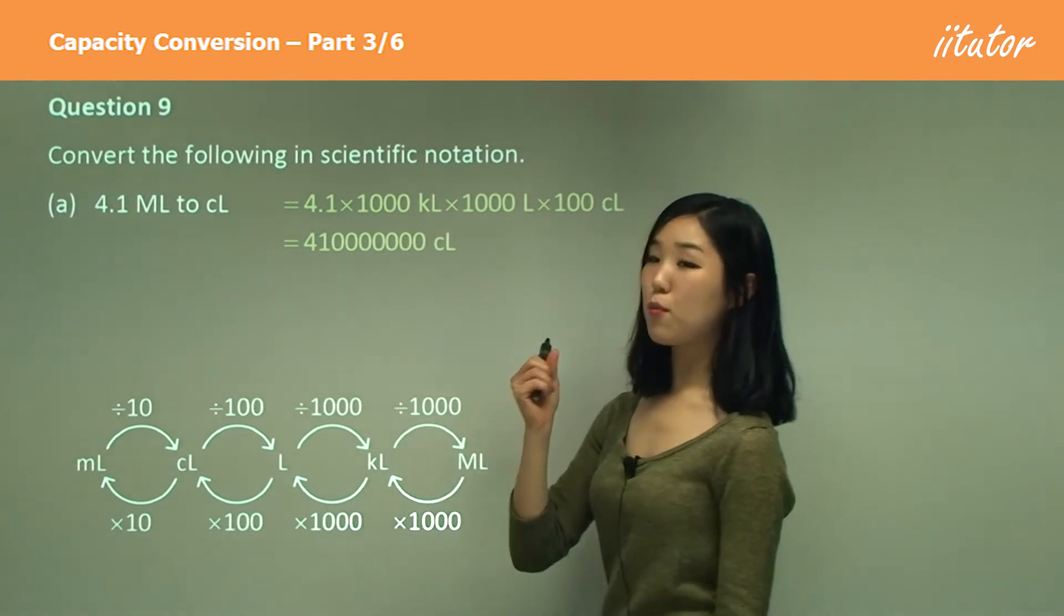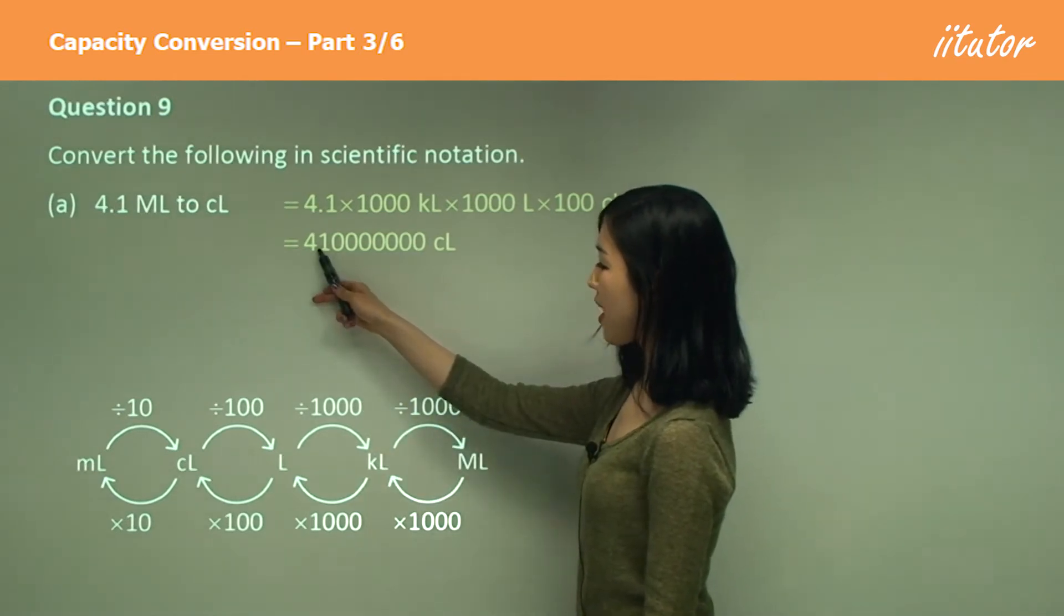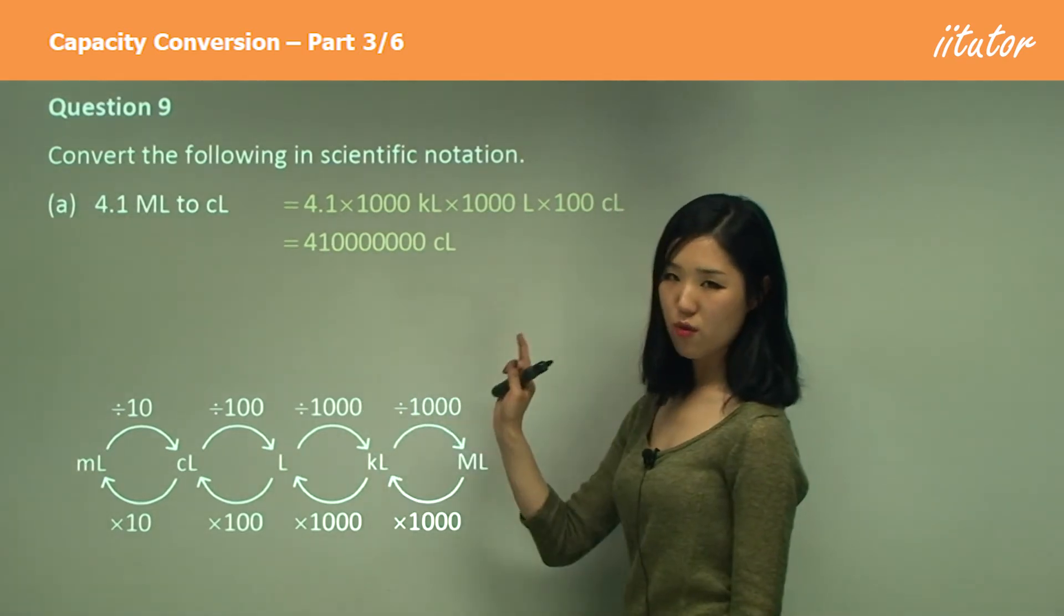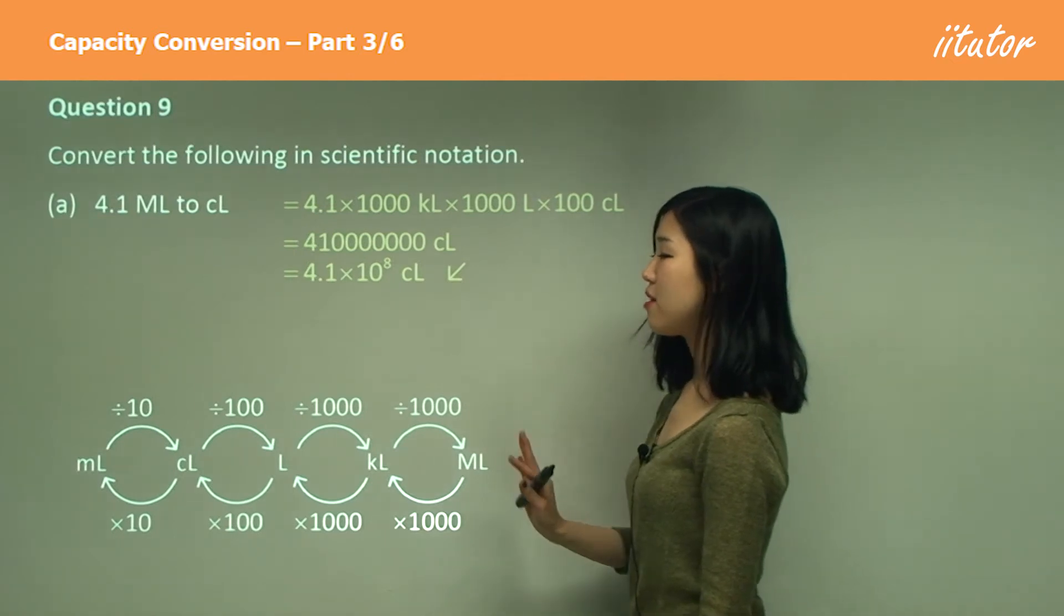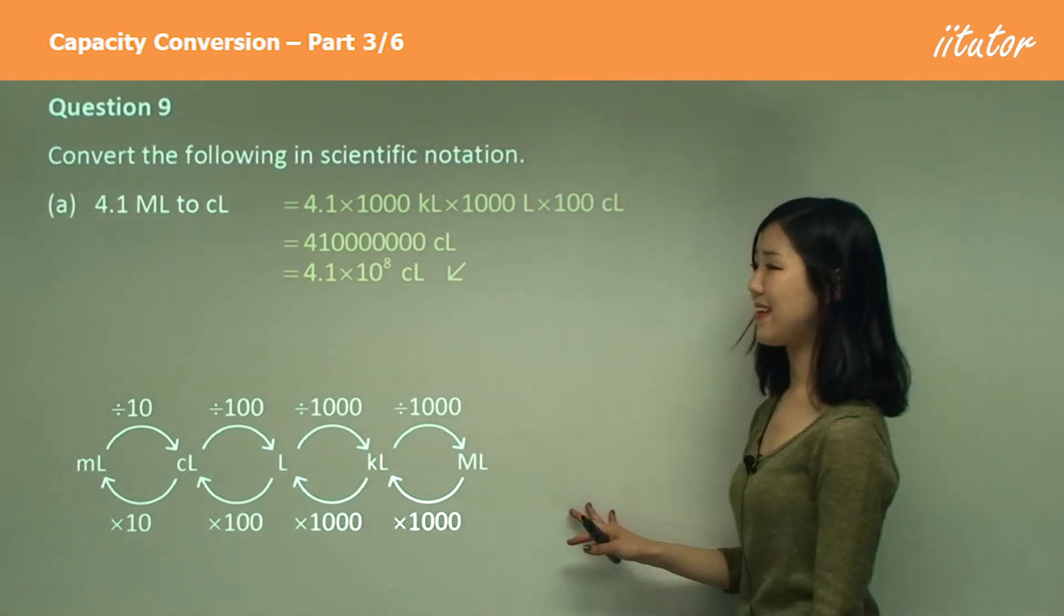But again, we want to put it in scientific notation. Put the decimal there guys, and count how many we go to the right, which will be eight places. So 4.1 times 10 to the power of eight.